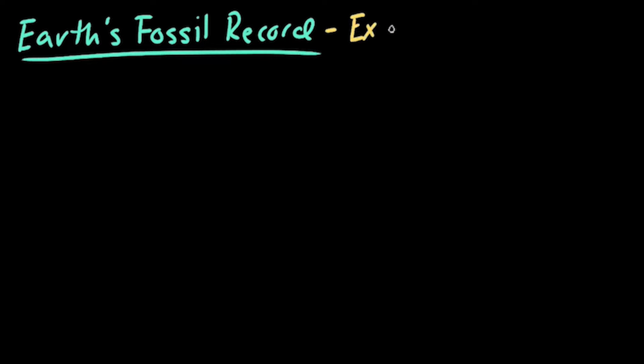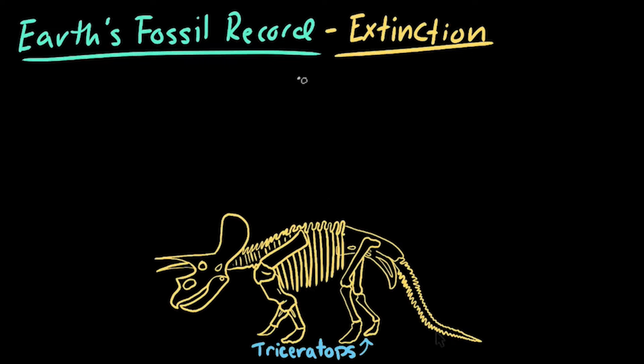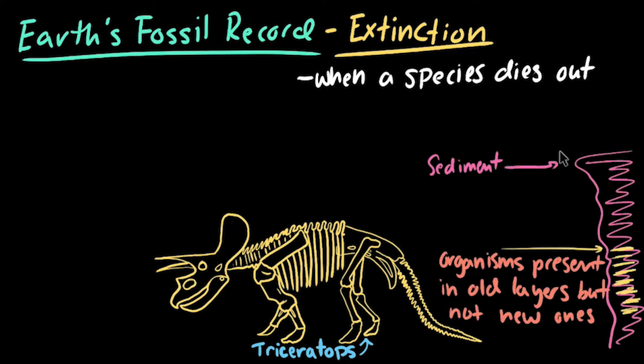Finally, let's take a look at the patterns of extinction seen in the fossil record, with the help of our extinct friend, the Triceratops. Extinction happens when a species completely dies out. In the fossil record, extinctions show up as organisms of a certain species being present in older rock layers and then completely disappearing from the newer rock layers.